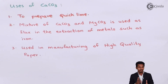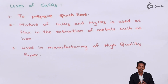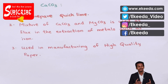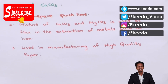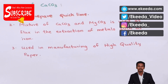In this topic, we covered two main compounds of calcium: calcium carbonate and quicklime (CaO), including their properties and uses. Thank you for watching. I hope you understood clearly and gained useful information. Please share this video with your friends and don't forget to subscribe to the Ekita channel.